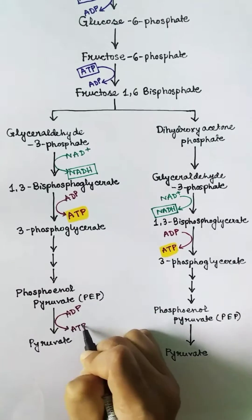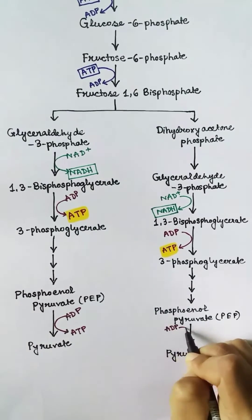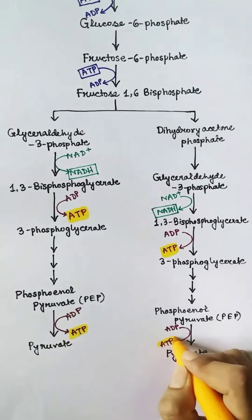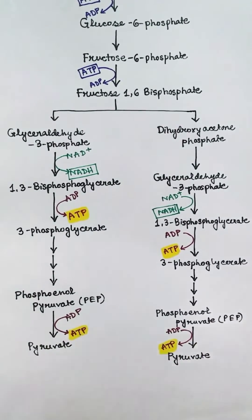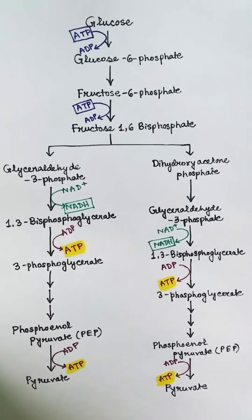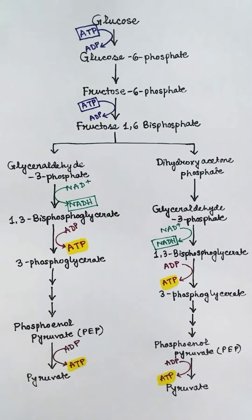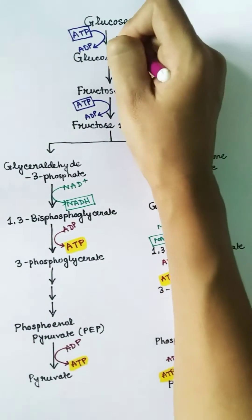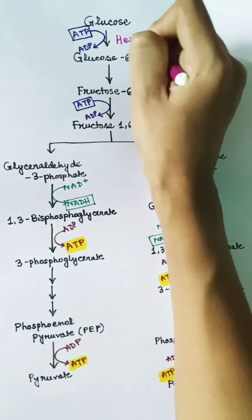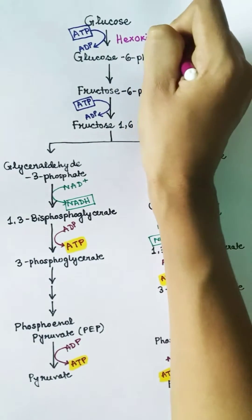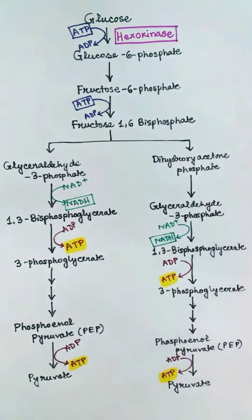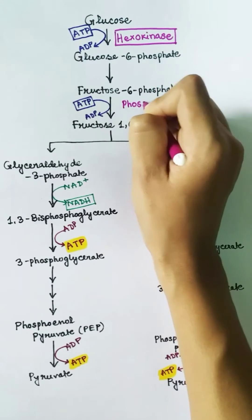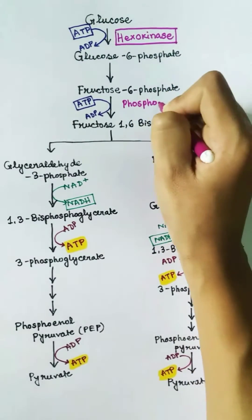So the total number of ATPs produced in this pathway is four, but the net gain of ATP is two, as two ATPs were consumed during the initial phase of glycolysis. Now let's mention the enzymes. The first enzyme is hexokinase, involved in the first ATP consumption.